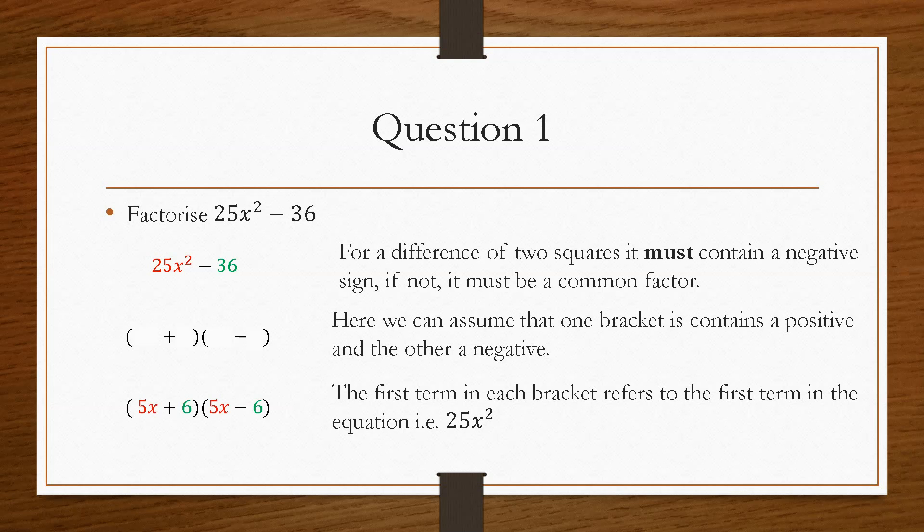And then the 36, two numbers that must be the same would be 6 and 6. And what you will find is these brackets will be identical to each other apart from one will have a plus and one will have a minus. And that's how you would go about solving a difference of two squared. It doesn't get much difficult than that.